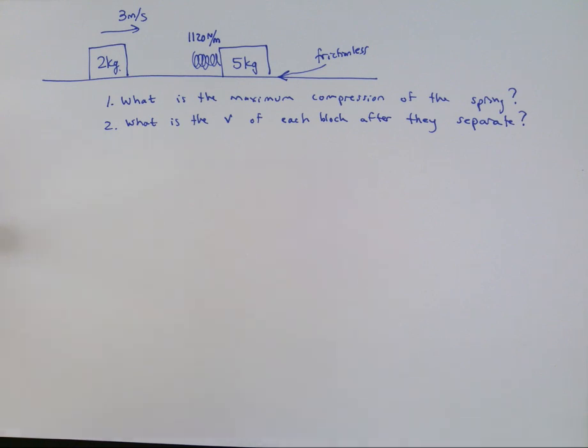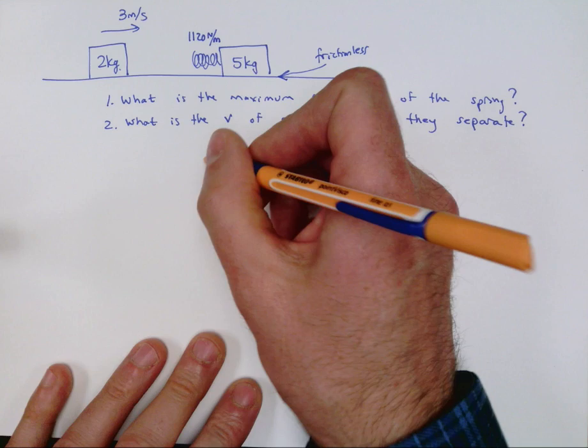So obviously let's take on number one first. The key to solving that question is knowing how fast are they going when the maximum compression occurs, and not really talking about a specific number here, I'm talking about relative to each other. So it turns out that the maximum compression occurs when they have the same speed as each other, and if you think about it that makes sense.